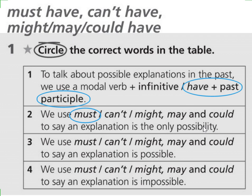And the third one: we use must or can't or might, may, and could plus have plus past participle to say an explanation is possible. Because we are talking about an explanation that is possible, in this case we are talking about might, may, and could plus have plus past participle. This is very important — an explanation is possible while we are talking about this, so might have, may have, or could have is used.